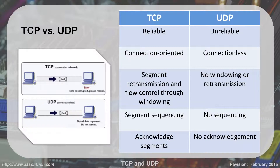With TCP, we acknowledge each segment — 'Yes, I got those 10 pages.' With UDP, it's just going to get there if it gets there, and if it doesn't, you're not going to get it. There is no acknowledgement and no resending.